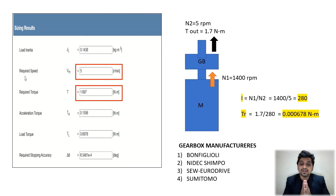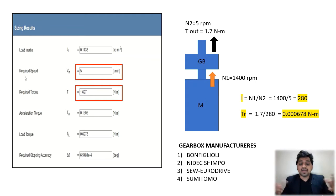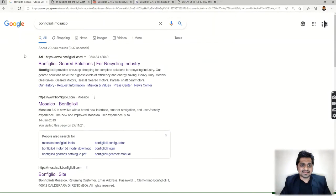There are different gearbox manufacturers available in the market, including Bonfiglioli, Lioili, Niadex, Zero Drive, and Sumitomo. Let's look at a tool offered by Bonfiglioli called Bonfiglioli Mosaico. Search for 'Bonfiglioli Mosaico' and click on it to open the site.